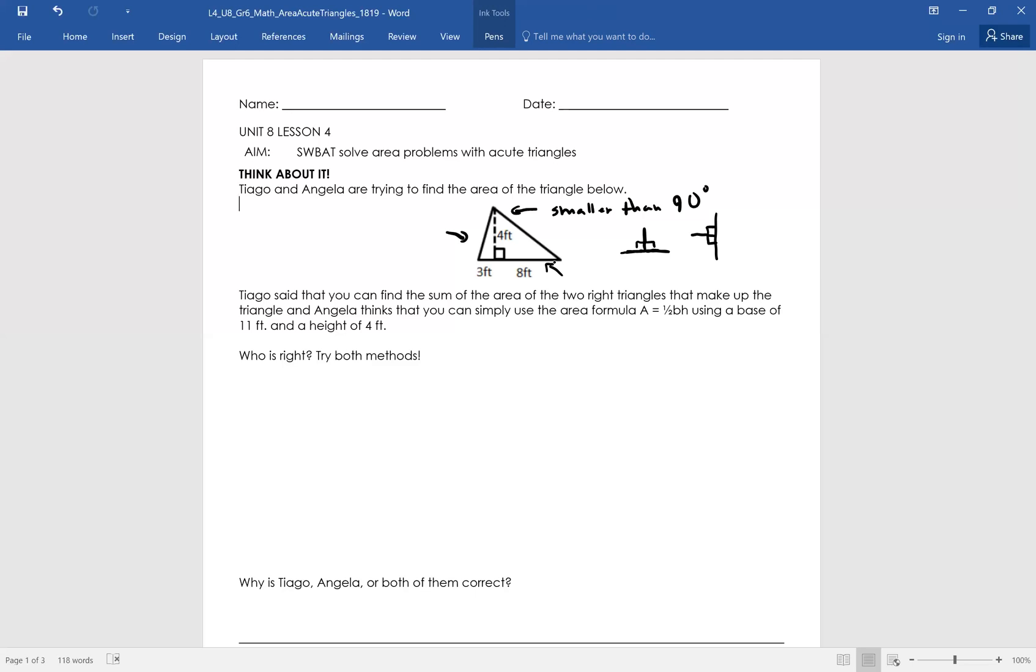And it says use the base of 11 feet and a height of 4 feet. Where'd they get 11 from? They took the base of the entire triangle. 3 plus 8 gives me 11. It says it was right. Let's try both methods, guys.